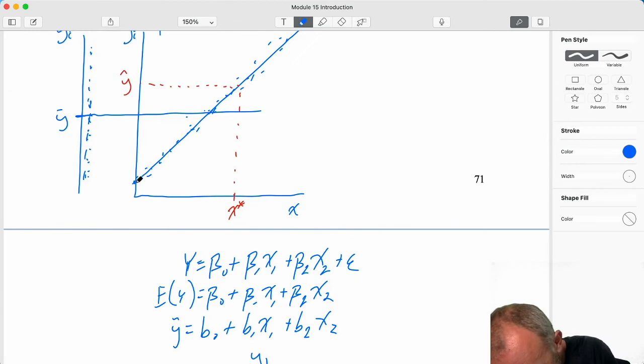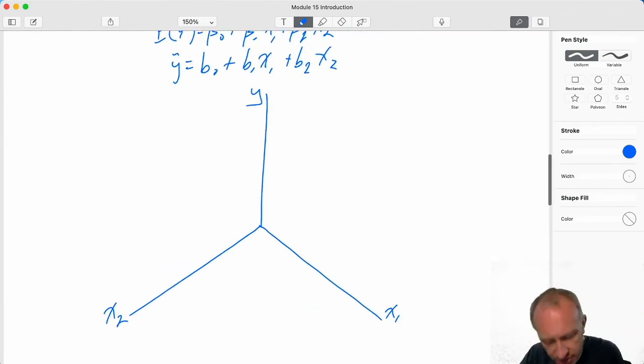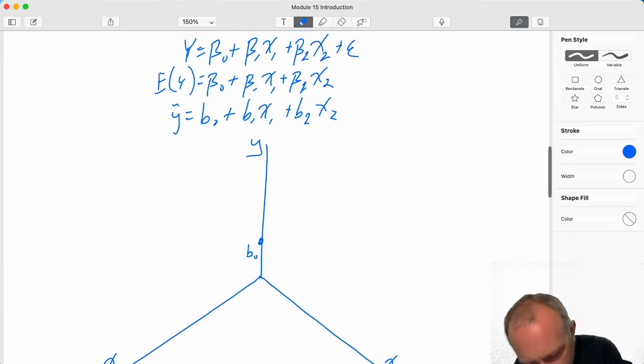Here I had some Y-intercept, B0, and I had some slope, B1. Well, here, too, I have some Y-intercept, B0, but now I have two slopes, B1 and B2. We call these now partial slopes.